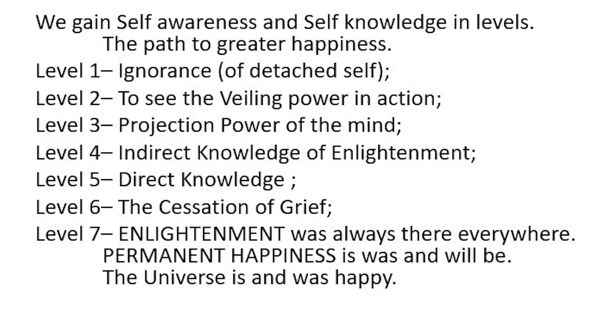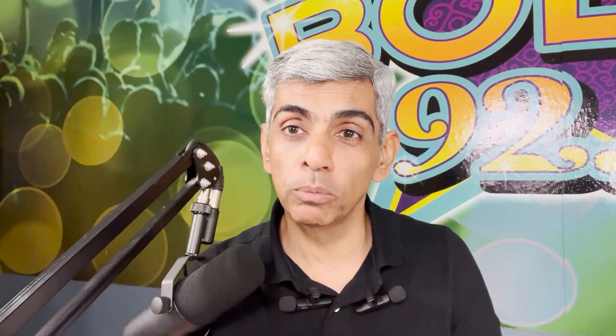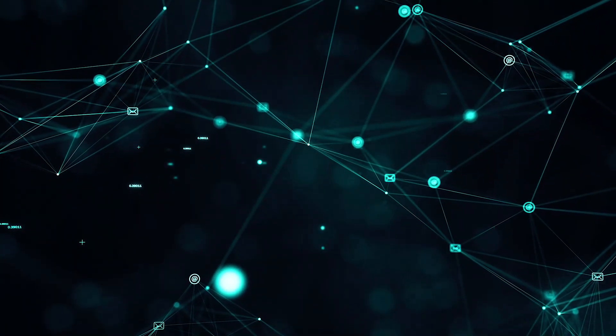Level one is called ignorance — submerged in maya. Level two is to see the veiling power of maya, the power by which knowledge is veiled from you. It's there, but you're able to see that some you can see and some you cannot. You're starting to cross that veiling, to see through it — what you saw firsthand is not the real truth. Level three is called the projection — the power by which your mind projects things that are not even there, but based on some sort of reality.